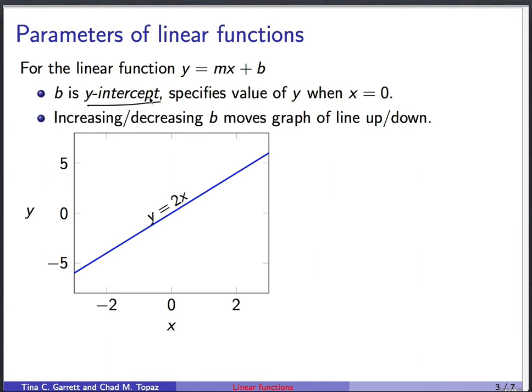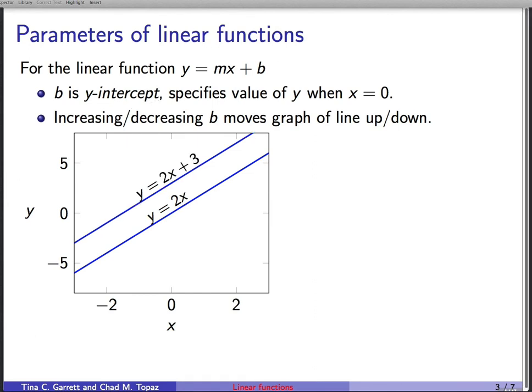So in this case, we can ask what the intercept is for the function y equals 2x, and I go to x equals 0. And that's right here. And I have to look at what the y value is there, and it's 0. So for the function y equals 2x, the y-intercept turns out to be y equals 0. We can ask what happens if we increase or decrease that y-intercept, if we change this value of b in the equation. And what that does is it moves the graph of the line up and down. So here's y equals 2x, here's y equals 2x plus 3. We get a parallel line that's been shifted up by 3 units.